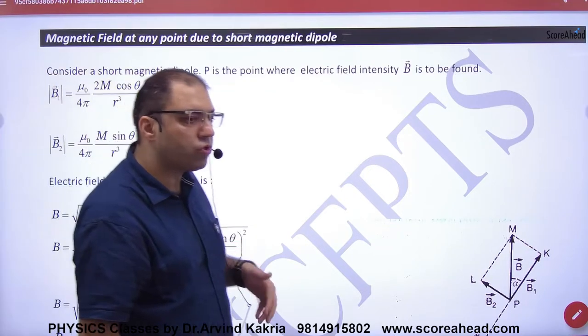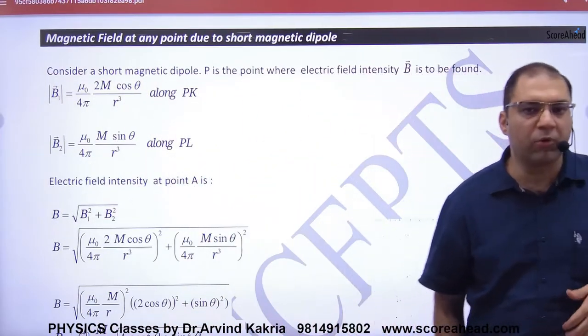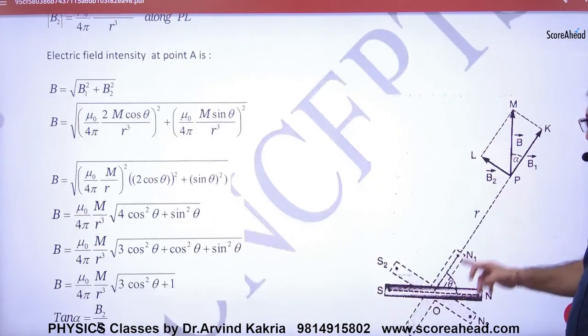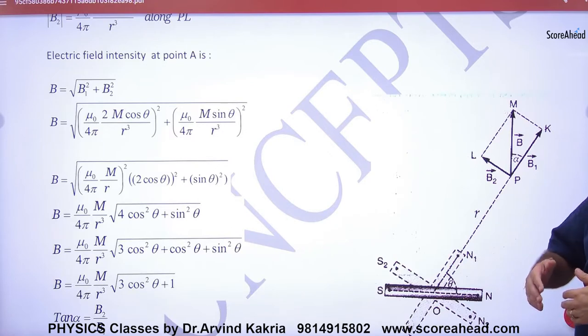Magnetic field at any point due to short magnetic dipole. Remember that in electrostatics we had done this topic. It's a dipole and we had E at any point. We had left E at any point, we had left B at any point.